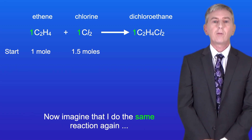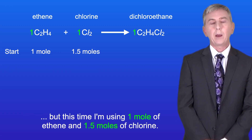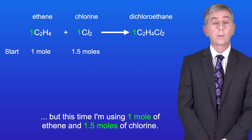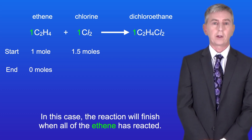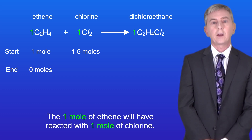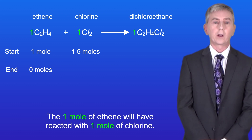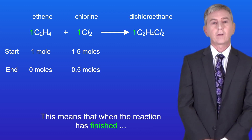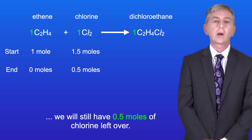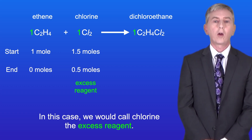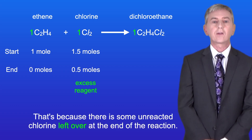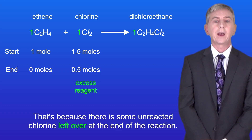Now imagine I do the same reaction again, but this time I'm using one mole of ethene and 1.5 moles of chlorine. In this case the reaction will finish when all of the ethene has reacted. The one mole of ethene will have reacted with one mole of chlorine, meaning that when the reaction is finished we will still have 0.5 moles of chlorine left over. In this case we would call the chlorine the excess reagent, because there's some unreacted chlorine left over at the end of the reaction.